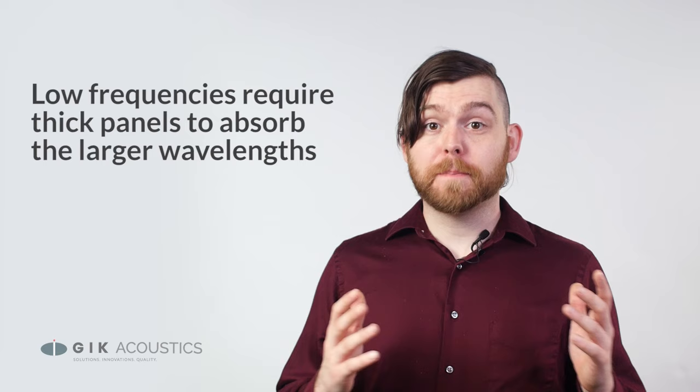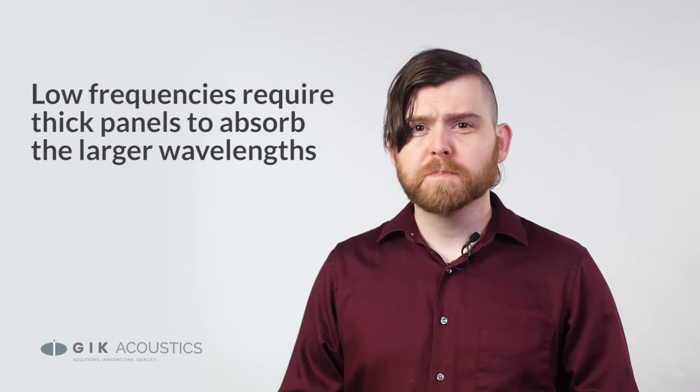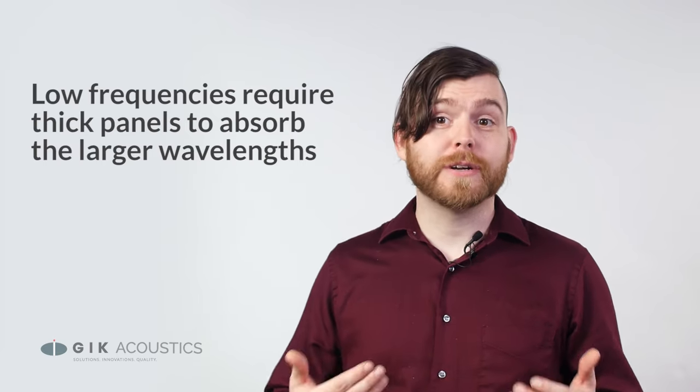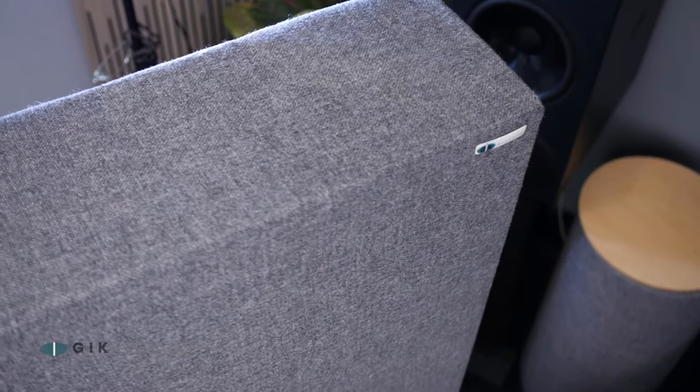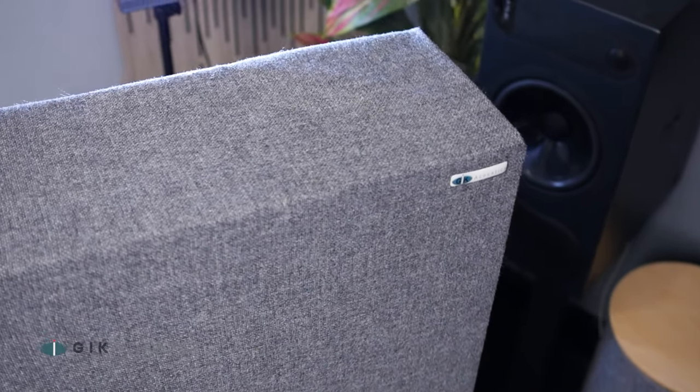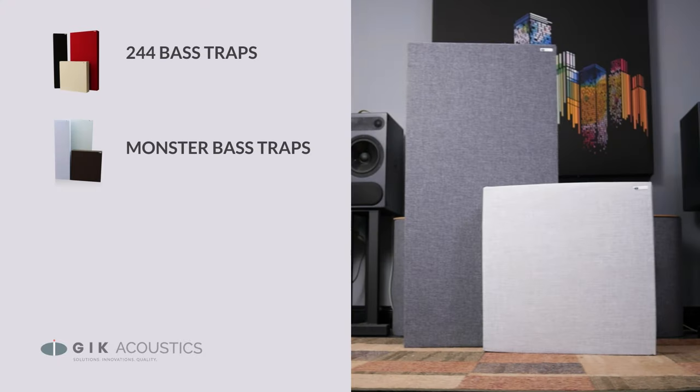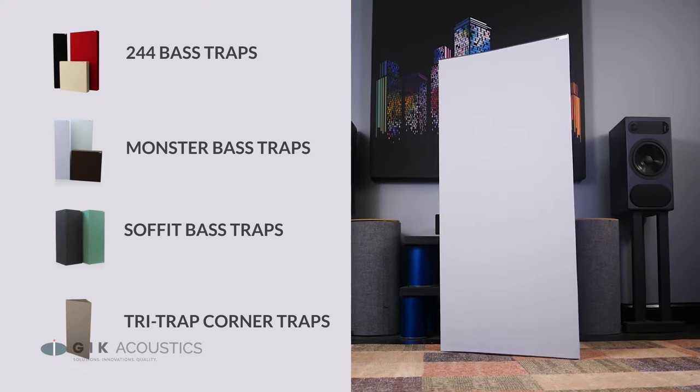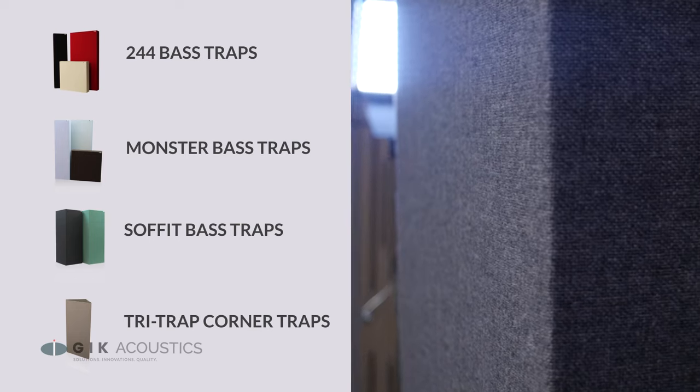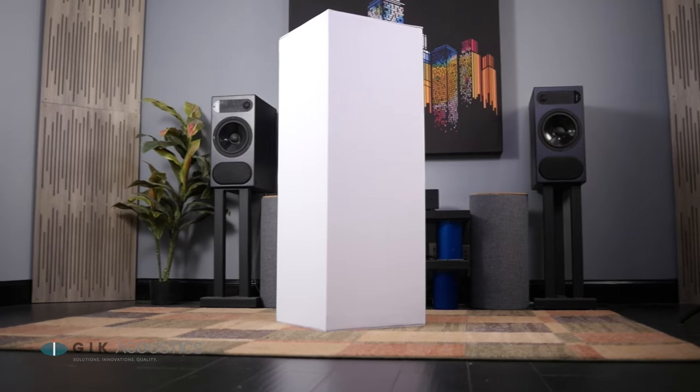Have you ever noticed bass instruments tend to be larger than most other instruments? Just in the same way that you need a larger instrument to create a lower tone, you need a thick panel in order to absorb it. The wavelength is physically larger. Thick broadband panels like the 244 Monster, Soffit Trap, and Tri-Trap should make up the bulk of your low-end treatment strategy. Remember, the thicker the panel, the lower the effective range of absorption.